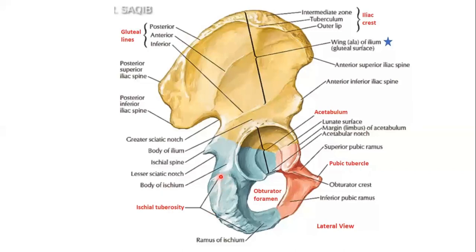This is the pubic tubercle. This is the acetabulum. This is the iliac crest — it has a very particular anatomy which we'll discuss soon.